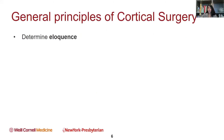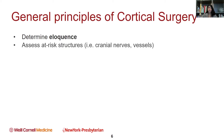In terms of how we think about doing surgery on things like this, we first determine eloquence. Eloquence generally just means: does something have a function that can't be replaced by something else in the brain? Does it have a critical function that we rely on for our daily activities? We'll talk about the different areas that are considered eloquent.